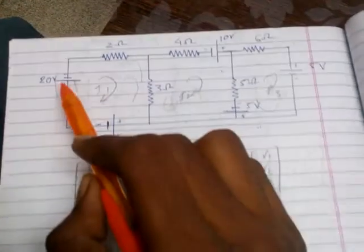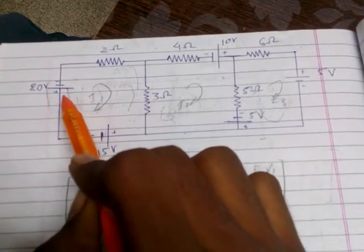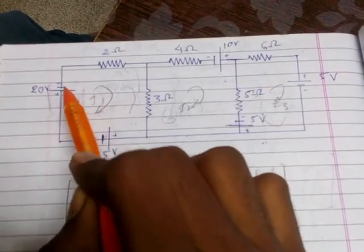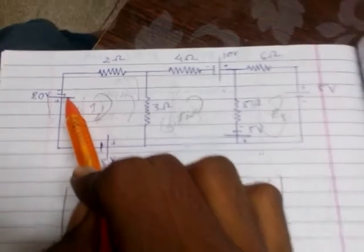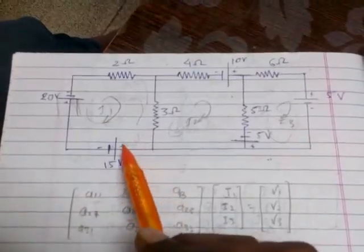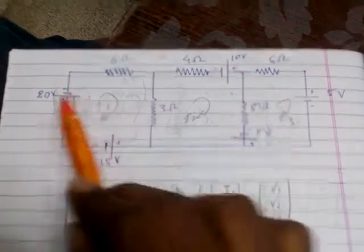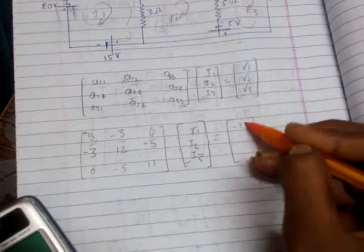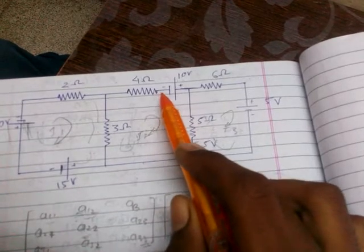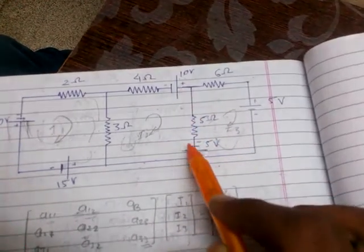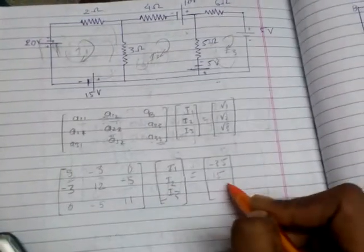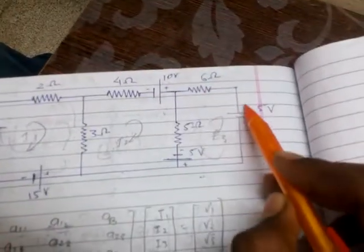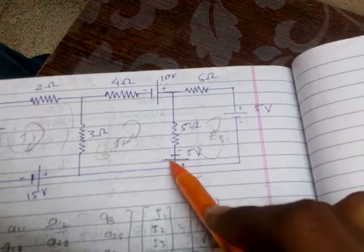For V1, the current goes clockwise — it encounters 20 volts positive-to-negative and 15 volts positive-to-negative, both giving negative values, so V1 equals minus 15 minus 20, which is minus 35. For V2, the current goes negative-to-positive through 10 volts and 5 volts, so V2 equals plus 10 plus 5, which is 15. For V3, the current goes positive-to-negative through two 5-volt sources, so V3 equals minus 5 minus 5, which is minus 10.